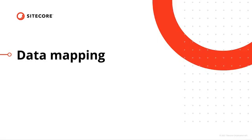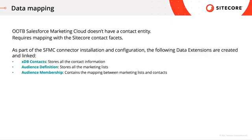Next we'll have a look at how data is mapped between the two systems in more detail. Out of the box, Salesforce Marketing Cloud doesn't have a contact entity and therefore it requires mapping with the Sitecore contact facets. As part of the Salesforce Marketing Cloud connector installation and configuration, the following data extensions are created and linked: XDB contacts where all contact information is stored, the audience definition where all marketing lists are stored, and the audience membership data extension where the mapping between marketing lists and contacts is contained.